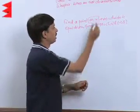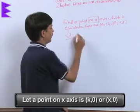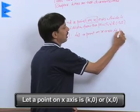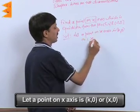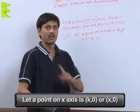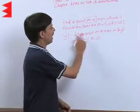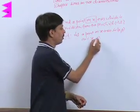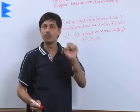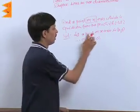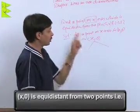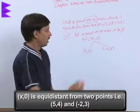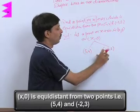Now we want to select a point on the x-axis. For the solution, let a point on the x-axis be (k, 0), or you can write (x, 0) — it is your choice. The y-ordinate is 0 because on the x-axis the value of y is always 0. This point (x, 0) is equidistant from (5, 4) and (-2, 3).